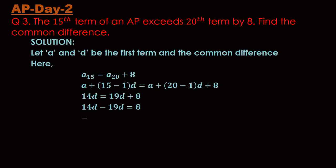That's -5d = 8, then d = -8/5. That's a simple mathematical calculation which should be easy for everyone. So that's question number three of AP day two.